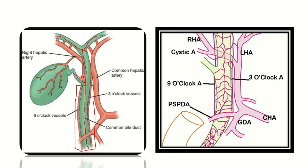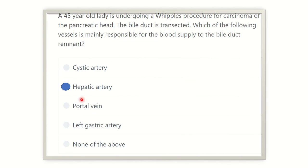In the second picture we can also see the common bile duct gets blood supply from the common hepatic artery and from the right hepatic artery. On the other hand, we can confirm that the bile duct gets blood supply from the hepatic artery. So our final answer is the hepatic artery.